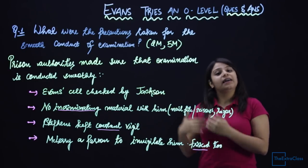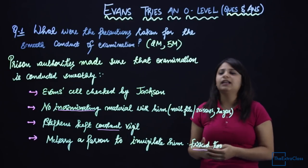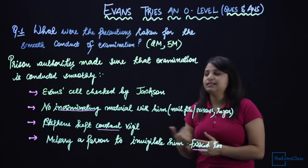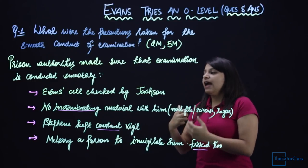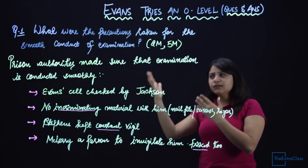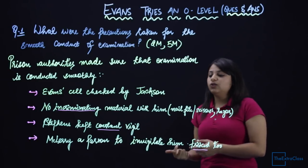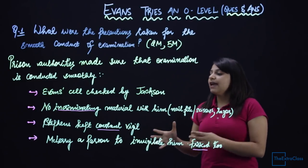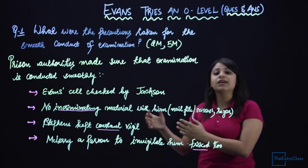I will tell you basic points for 2 marks and additional points for 5 marks. First, you will start your answer with: 'Prison authorities made sure that the examination is conducted smoothly.' Ivan's cell was checked by Jackson — he had his cell checked that he has no objectionable object and no incriminating material with him. Jackson asked Stephen to see that Ivan's cell has any material that is incriminating — like a razor when he shaved, nail file, nail scissors. Stephen kept a constant vigil — checking every 2-3 seconds.